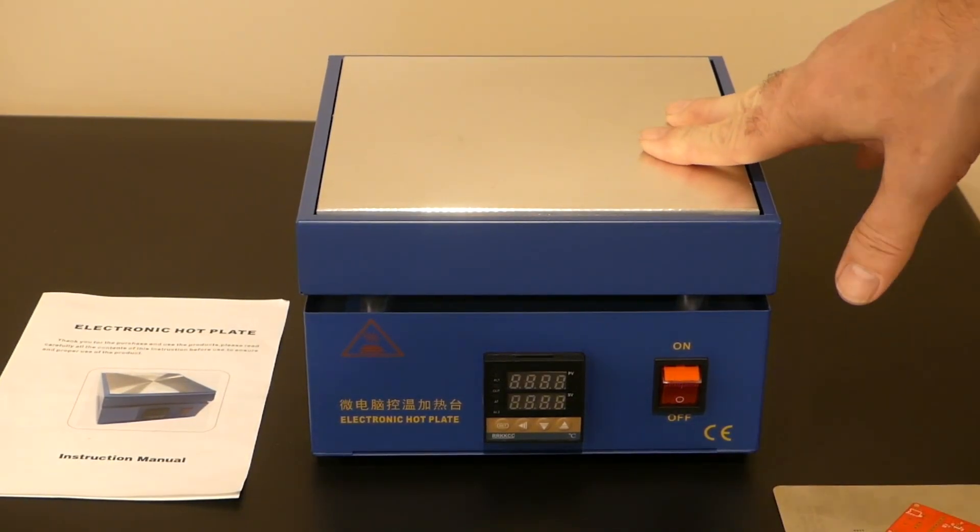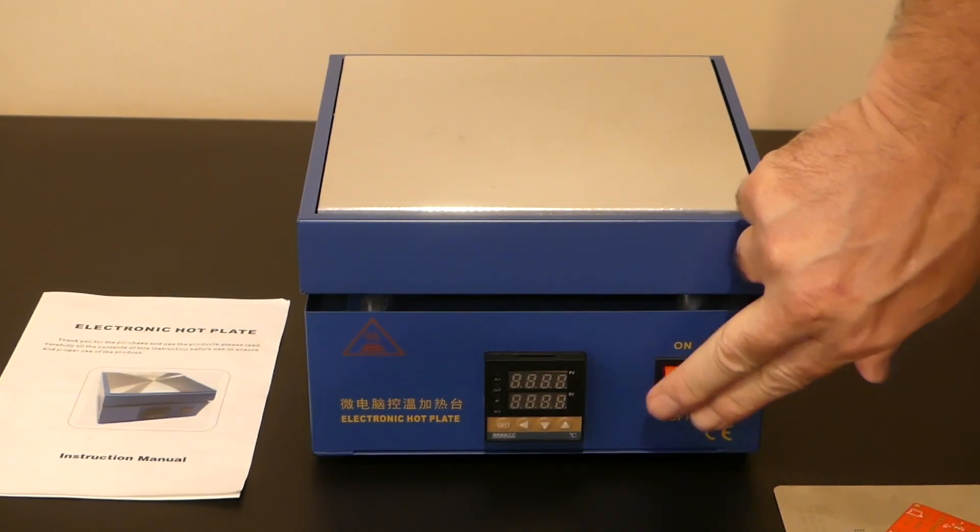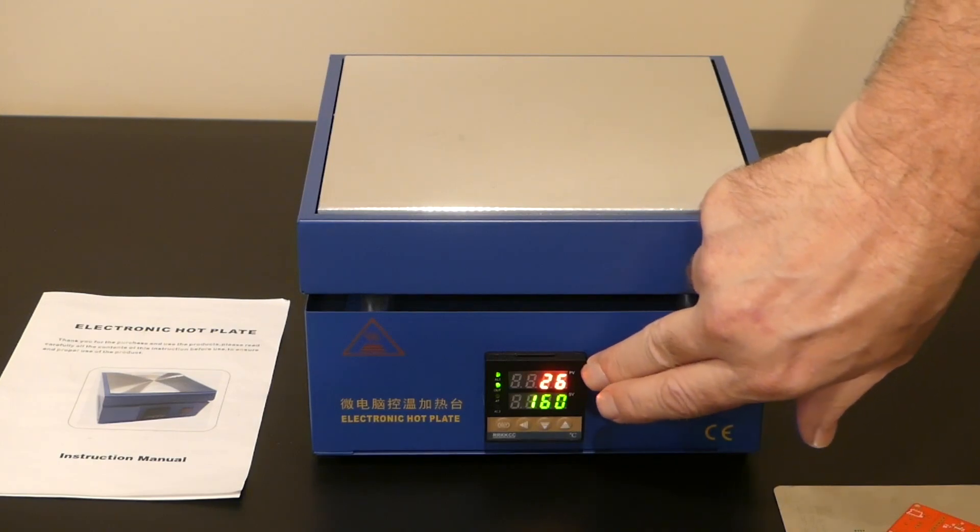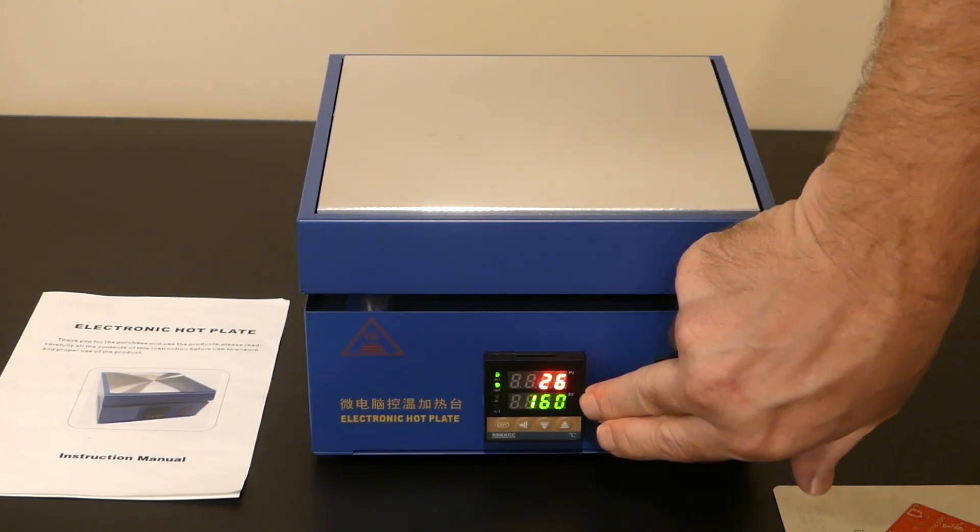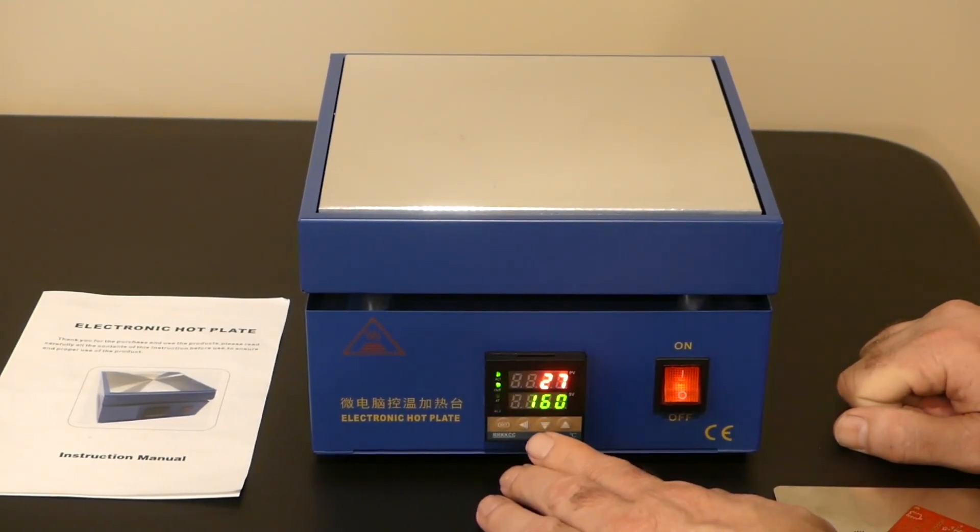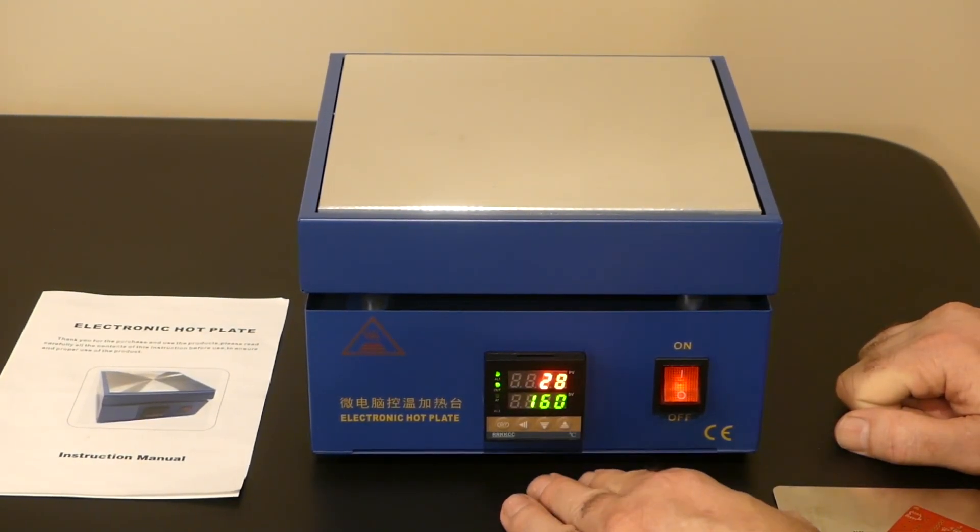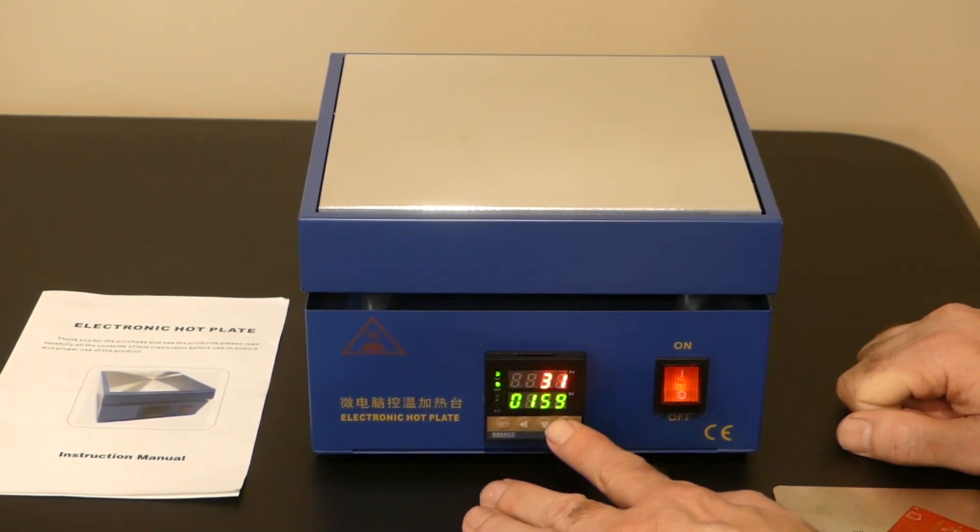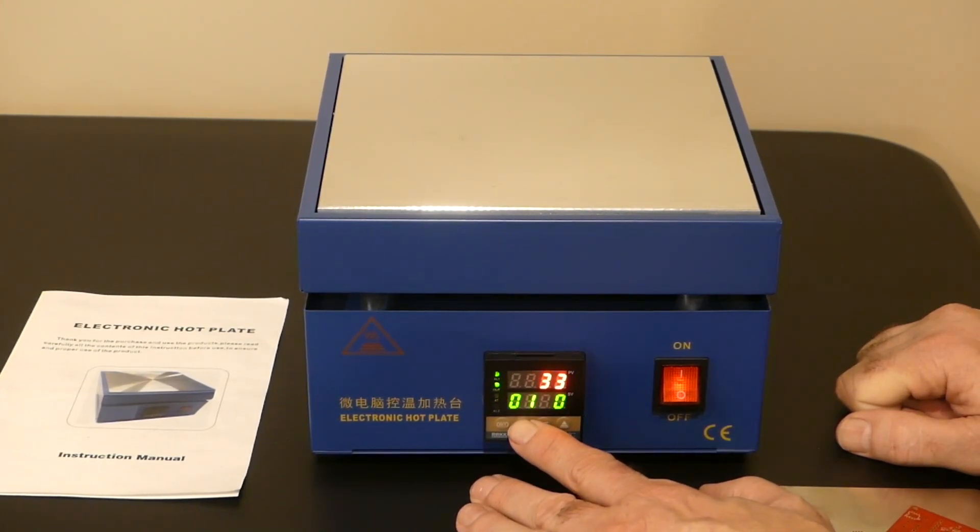Using this is super simple. There's two values on this readout right here. There's PV and SV. So PV stands for present value and SV is set point value. So if you want to change the set point value, we hit the set button up and down, changes the value and the little arrow moves where you're setting the value.